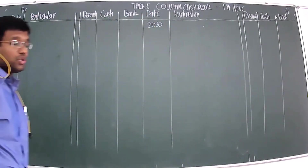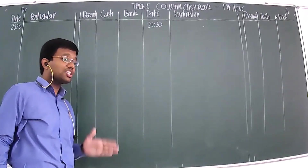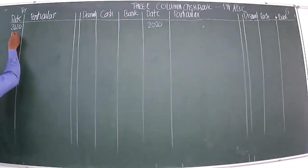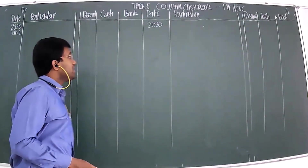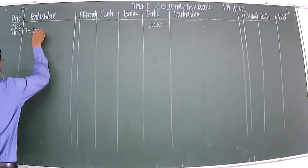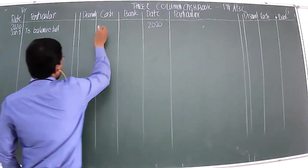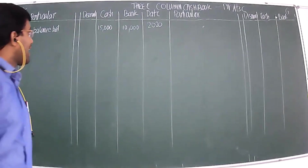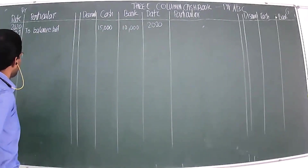We are preparing this three-column cash book in the books of accounts of Mr. ABC for January 2020. The first transaction on January 1st shows cash in hand ₹15,000 and at bank ₹10,000 — this means we are bringing down the previous month's balance. We record this as 'Balance b/d': cash column ₹15,000 and bank column ₹10,000.